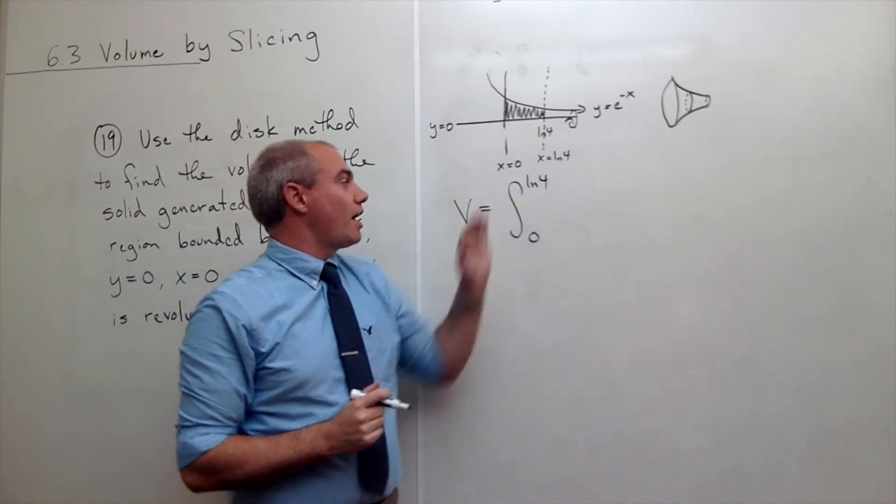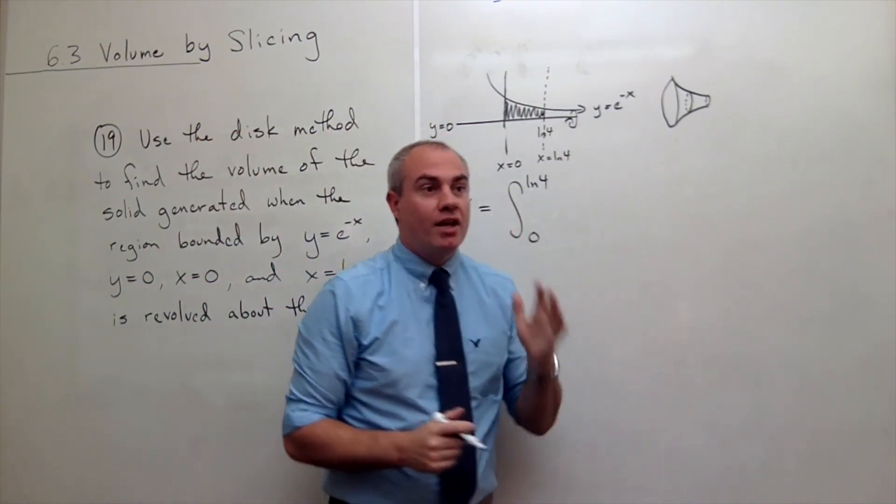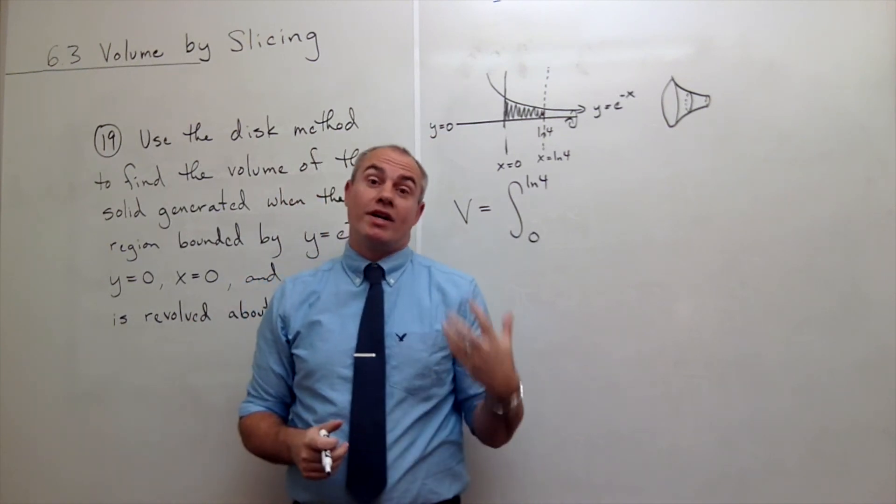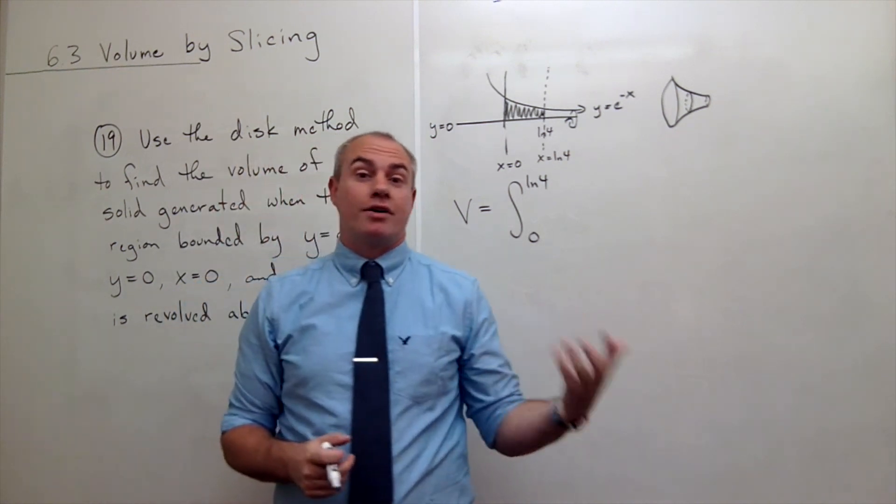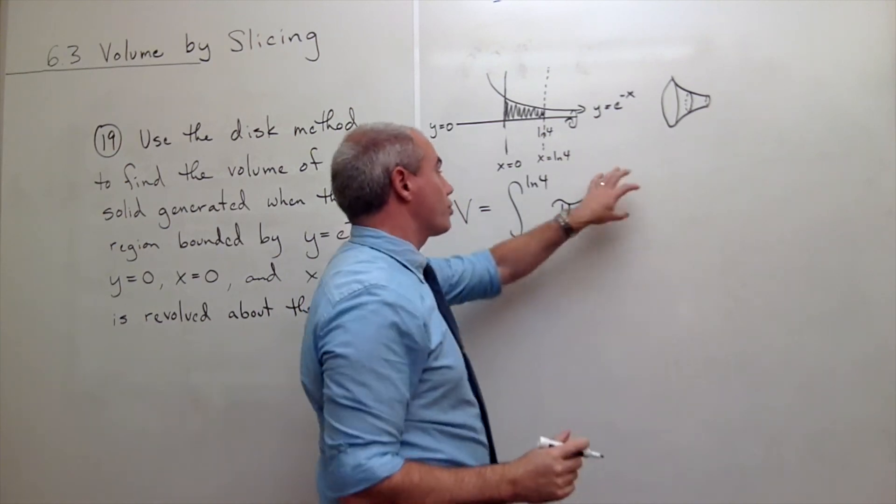So start and stop. And then we have the disk method. And in the disk method, every cross sectional area is a circle. And so what's the area of a circle? We know the area of a circle is pi r squared. And so we get pi r squared in here.